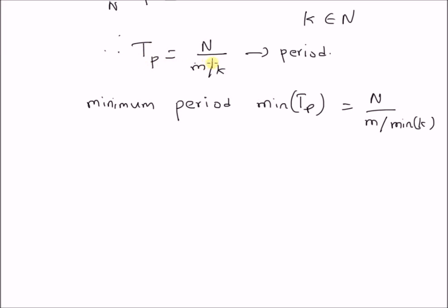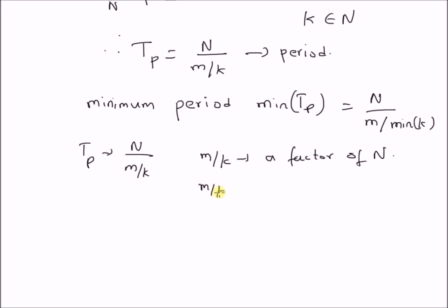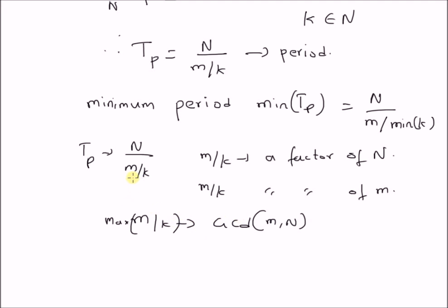For the period Tp to be an integer — and since we are dealing with discrete signals, Tp is an integer — N*k/m must also be an integer, meaning m*k must be a factor of N. Obviously m*k is also a factor of m*k itself. So the maximum value of m*k is clearly equal to the GCD of m and N, because m*k is a factor of N and clearly a factor of m. Therefore the maximum possible value is the GCD of m and N, and m times the minimum of k equals GCD(m, N).